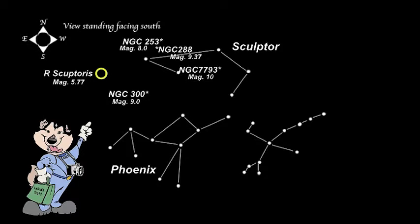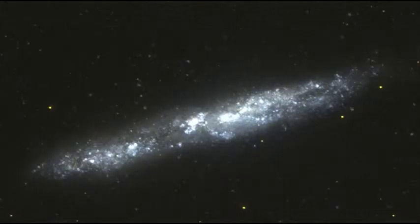Between Sculptor and the constellation Phoenix we find NGC 55. NGC 55, the southern cigar galaxy, is a spiral galaxy of magnitude 7.87. It is close to us at only 7.2 million light years away.